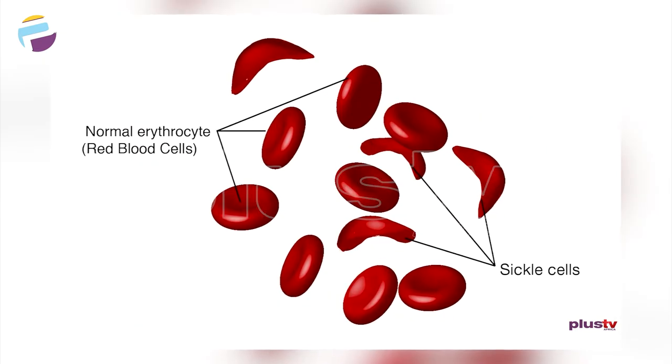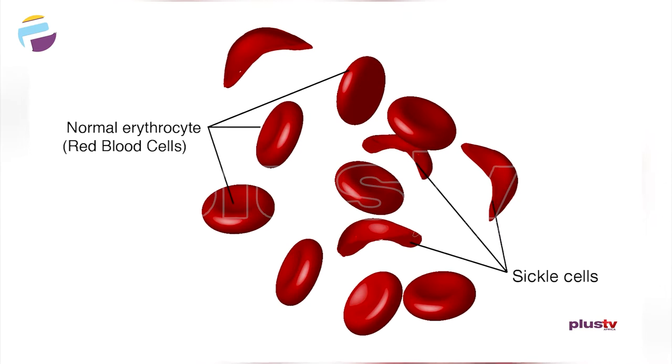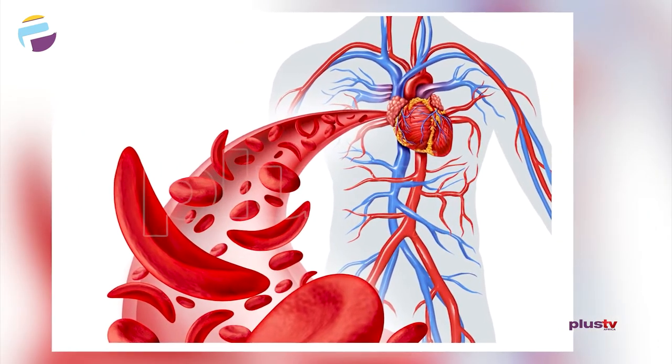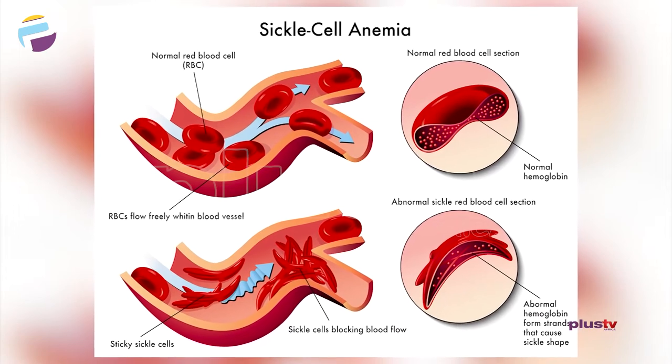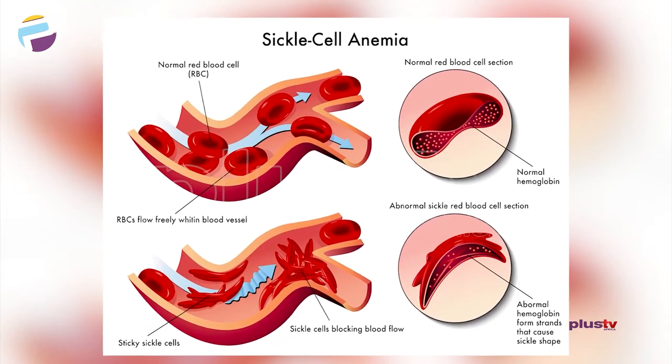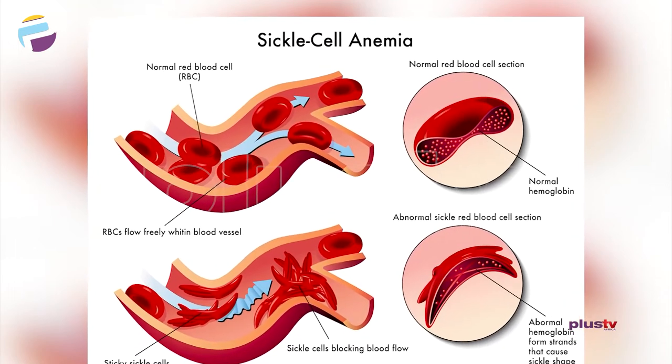When this mutation happens in an individual it is called a sickle cell trait. But the sickle cell disease happens when you have it from both the mother and the father coming together in one child, causing what is called HBSS. Others could be AS, but when both copies come together it becomes HBSS.